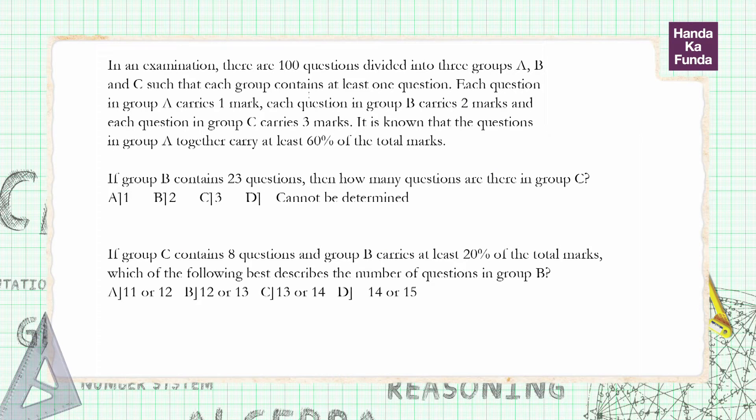Hi, in this particular question we are given 100 questions divided into three groups A, B, and C. Everything in group A carries one mark, in group B carries two marks, and in group C carries three marks. It is also known that group A should have at least 60%.